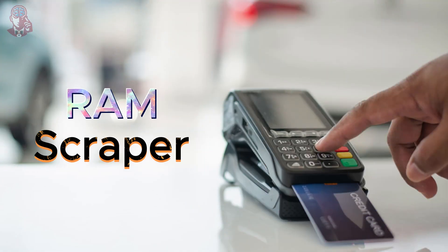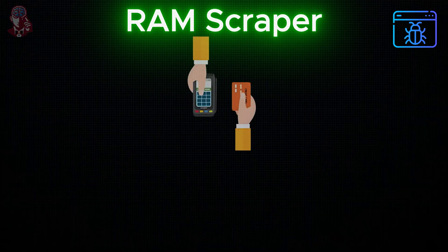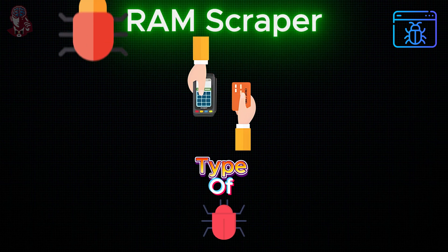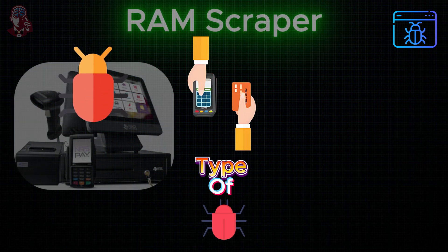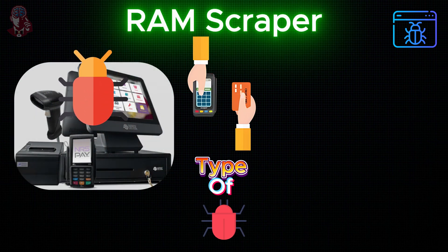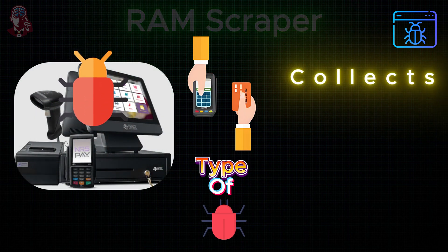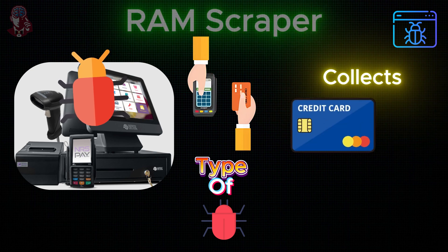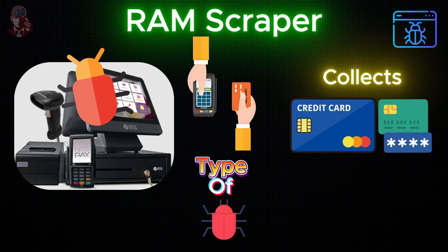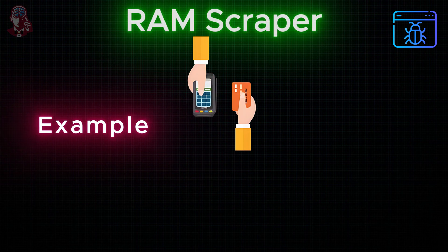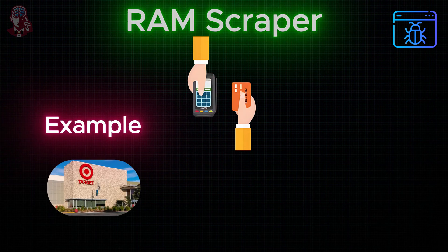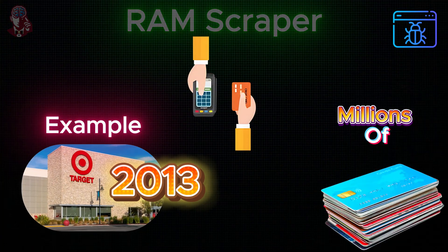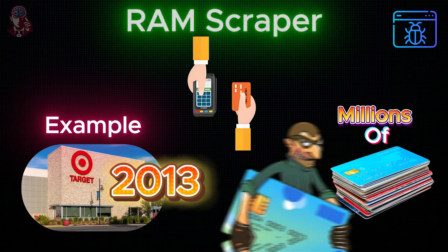RAM Scraper: A RAM scraper is a type of malware that installs itself on point-of-sale systems and collects personal information such as credit card numbers and PINs of consumers. Example: the Target breach in 2013, where millions of credit card details were stolen.